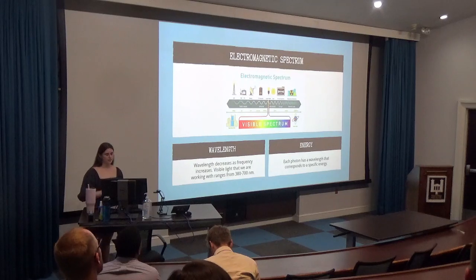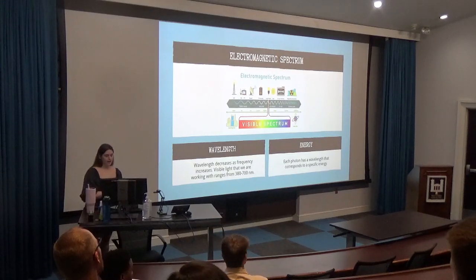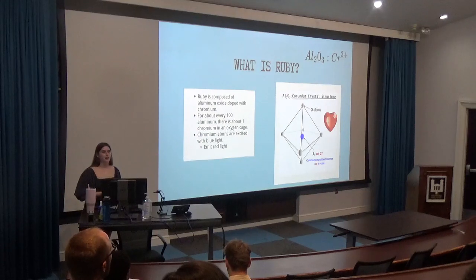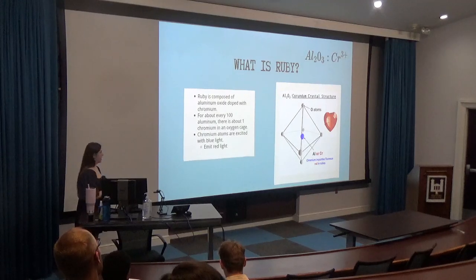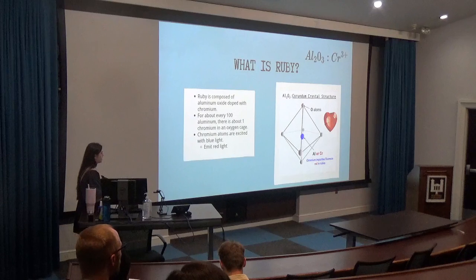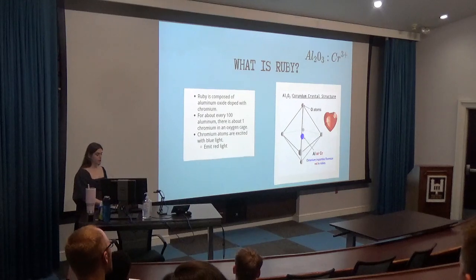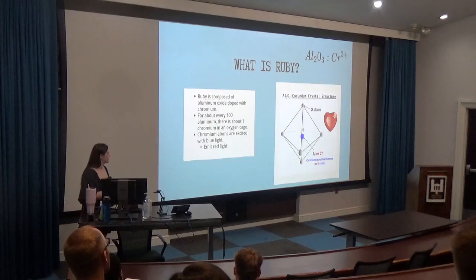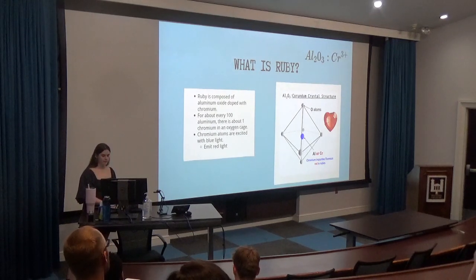To understand spectroscopy we need to understand light, because light is the foundation of spectroscopy. The main thing to understand is that every photon has a specific wavelength that corresponds to a specific energy. Additionally, we need to understand what ruby is composed of. Ruby and sapphire are actually very similar in that they have an aluminum atom surrounded by an oxygen cage. The only difference is that ruby is doped with chromium — for every 1000 aluminum atoms we have about one chromium atom. We are going to be looking at the energy levels of ruby.